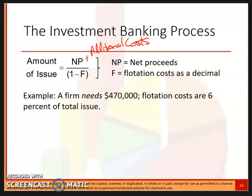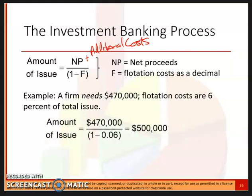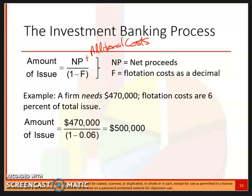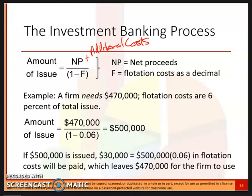For example: the firm needs $470,000 and flotation costs are six percent of the total issue. So the amount issued is $470,000 divided by one minus six percent, which equals $500,000. Thirty thousand dollars of that is used to pay flotation costs, leaving the firm with $470,000 in net proceeds.